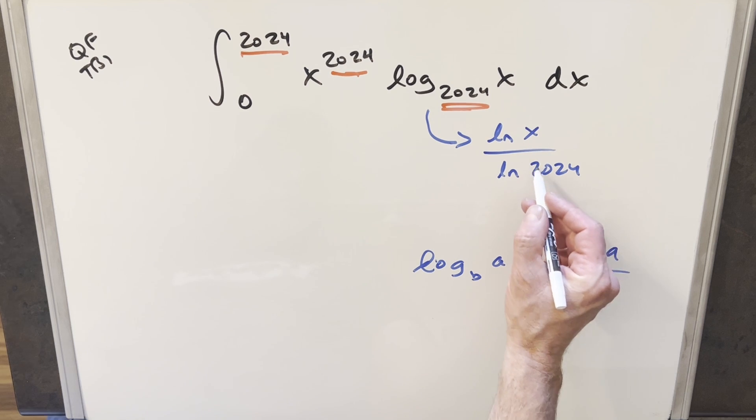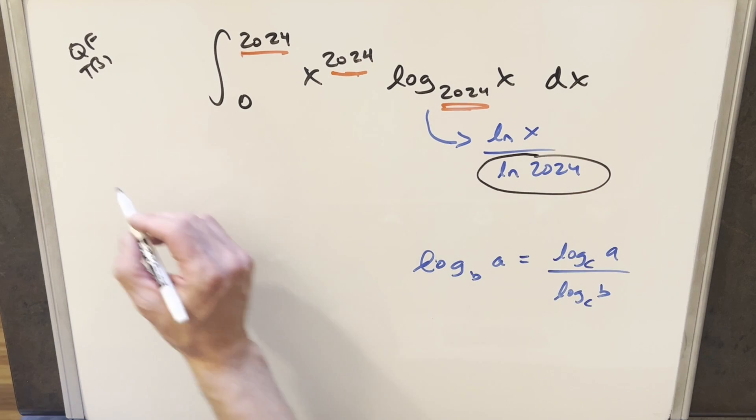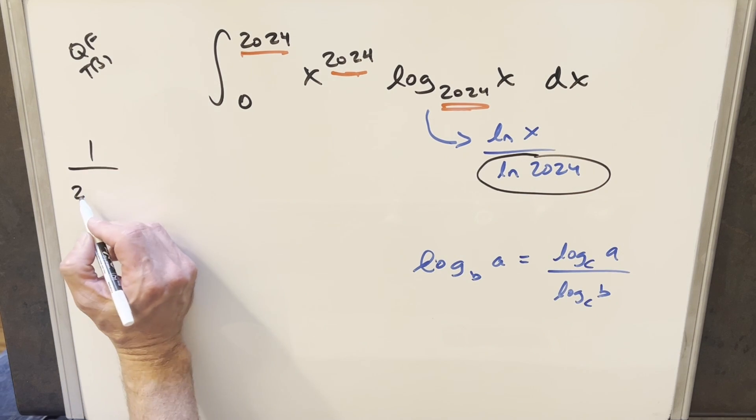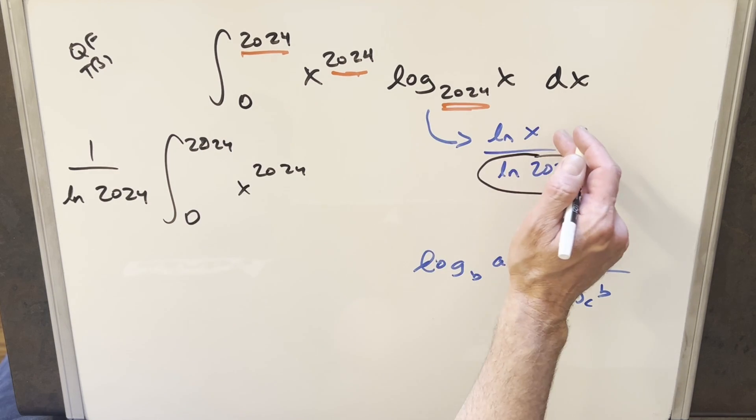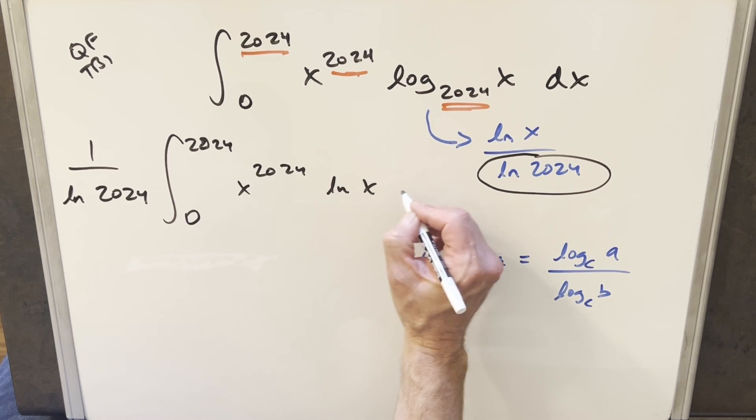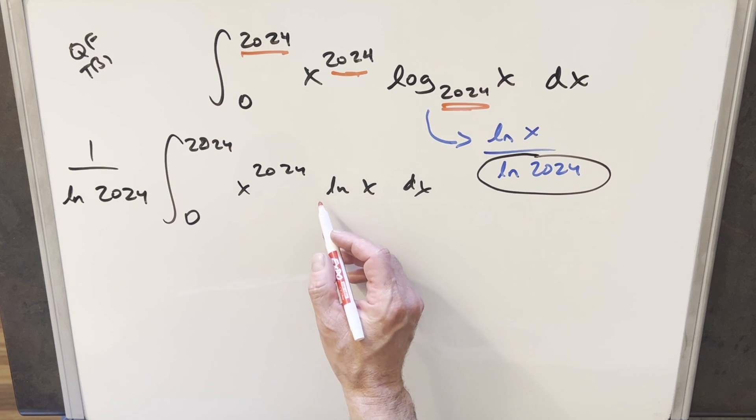But then I can go ahead and rewrite this. This right here is just going to be a constant value. So I'm just going to bring that out front of the integral like this. Same bounds here. And then here now we're going to have x to the 2024 natural log x dx.